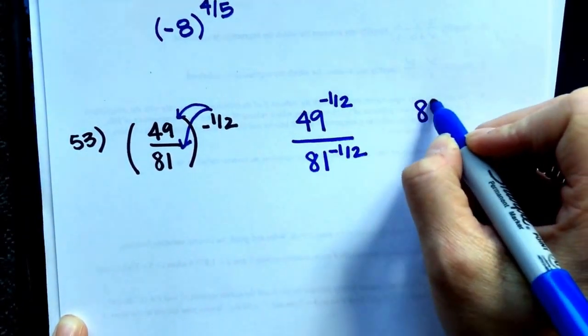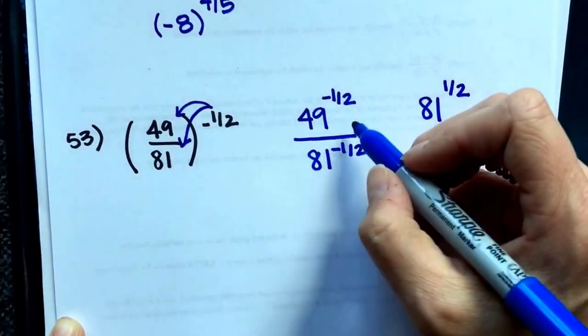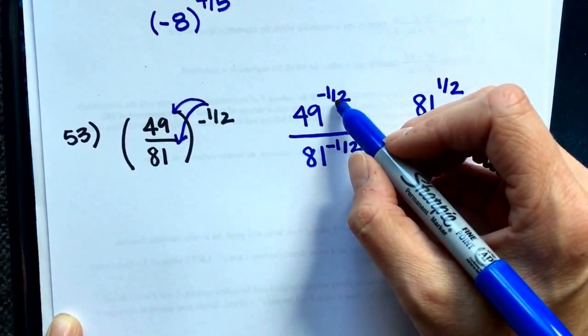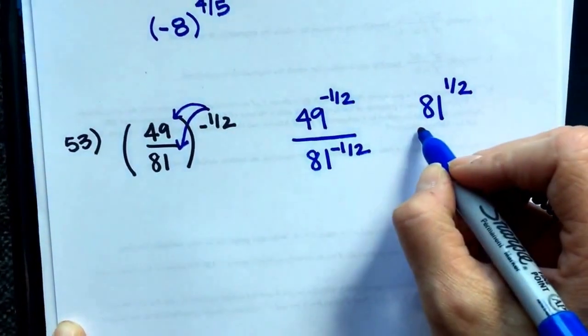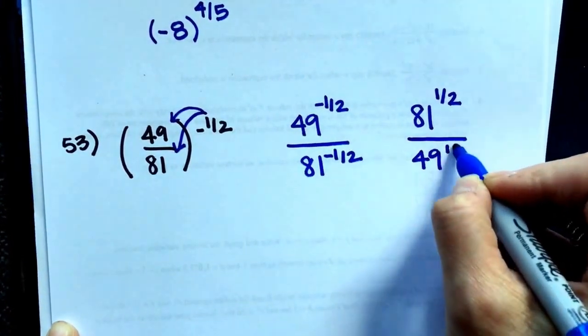So 81 goes to the top and becomes positive 1 half power. The 49 with the negative exponent, to change that to a positive exponent, I have to move it. If it's on the top now, when it moves, it goes down to the bottom to the positive 1 half.